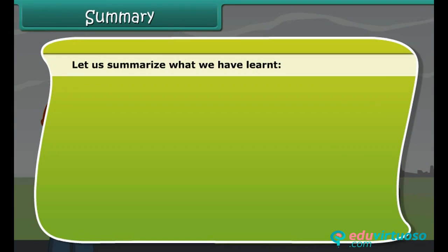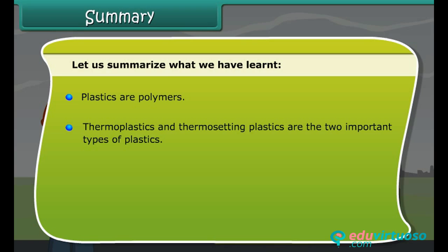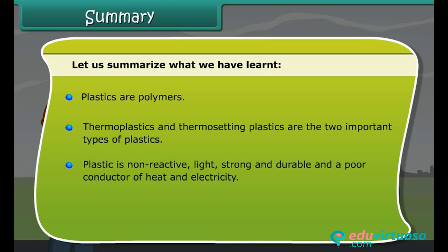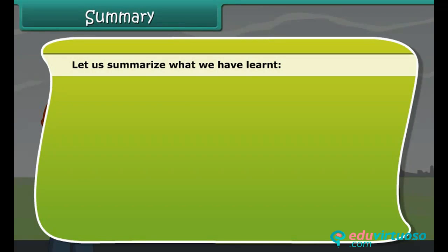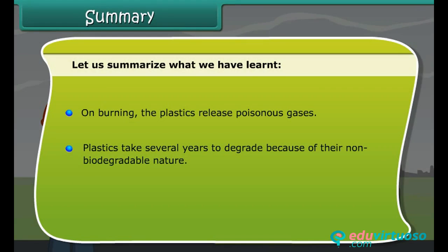Let us summarize what we have learnt. Plastics are polymers. Thermoplastics and thermosetting plastics are the two important types of plastics. Plastic is non-reactive, light, strong and durable, and a poor conductor of heat and electricity. Plastics find extensive use in the healthcare industry, building materials and pipelines. On burning, plastics release poisonous gases. Plastics take several years to degrade because of their non-biodegradable nature. Adopt the 4 R's: reduce, reuse, recycle and recover.